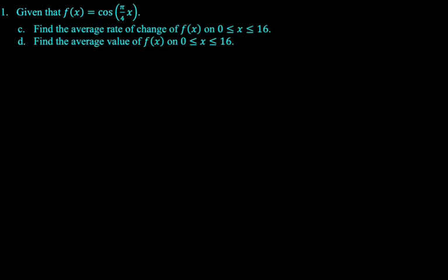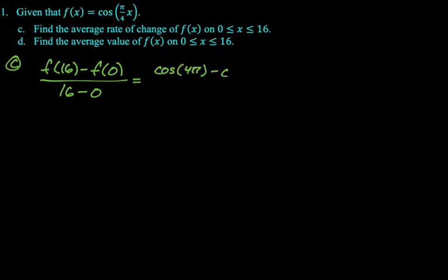Find the average rate of change of f of x on 0 to 16. And then the next part is to find the average value. And after I wrote this and started writing the answers up, I realized, is this a bad question? Not really, but average rate of change is algebra on slope. So f of 16 minus f of 0 over 16 minus 0. But then that's going to give us the cosine of 4 pi minus the cosine of 0 over 16 minus 0. And at this point I was like, this is just 0 because cosine of 4 pi is the same as the cosine of 2 pi is the same as the cosine of 0. They're both 1. So we get 1 minus 1 over 16, so we're getting 0 as our answer.